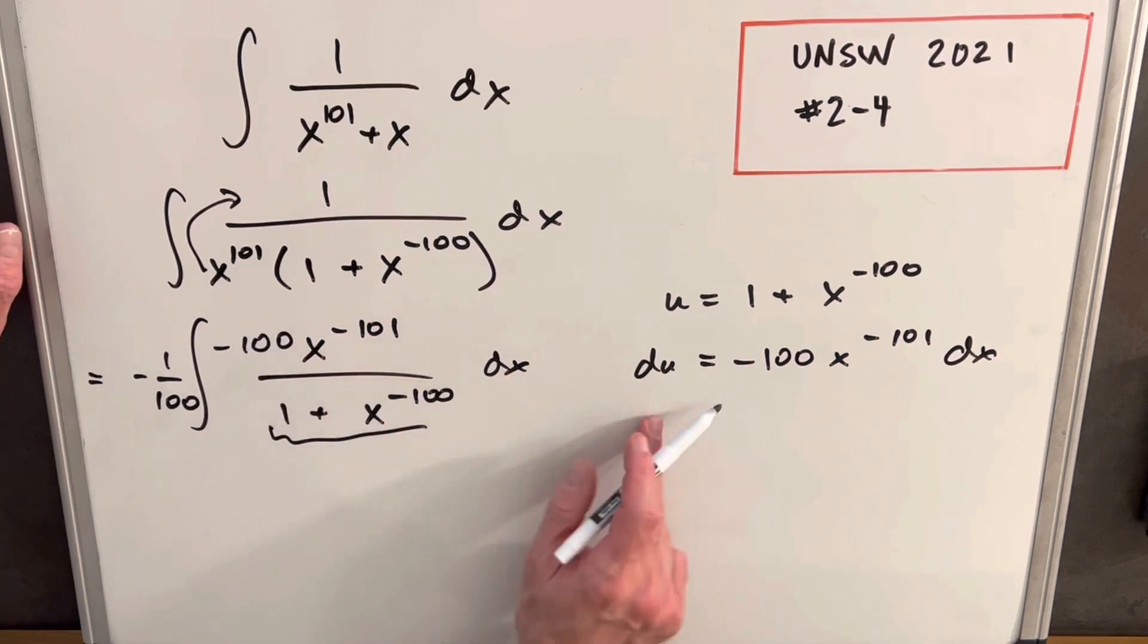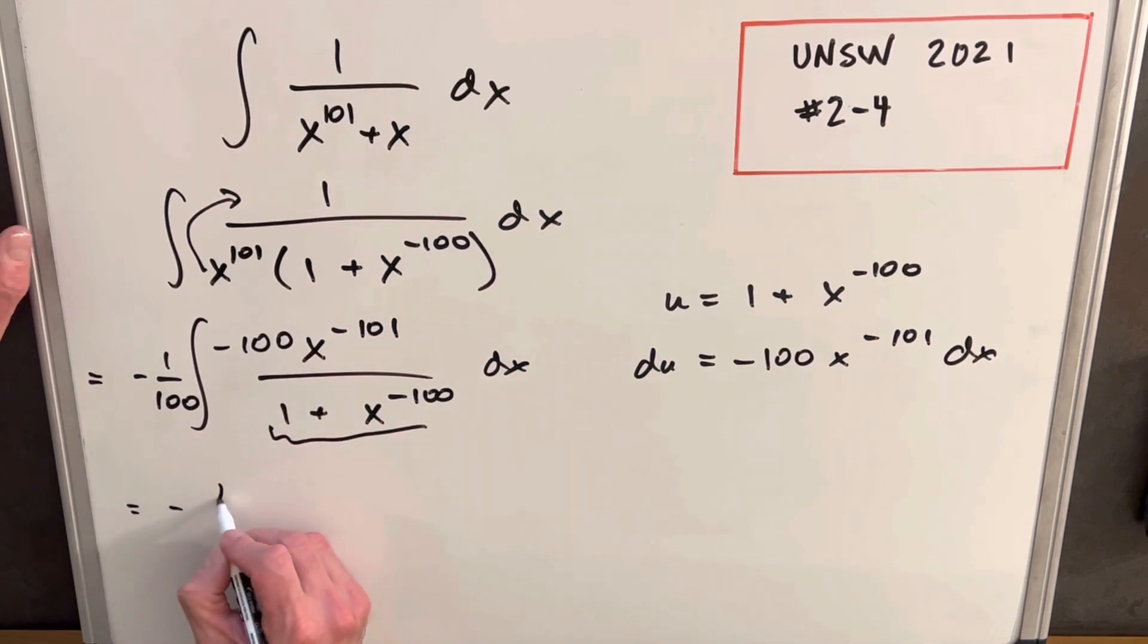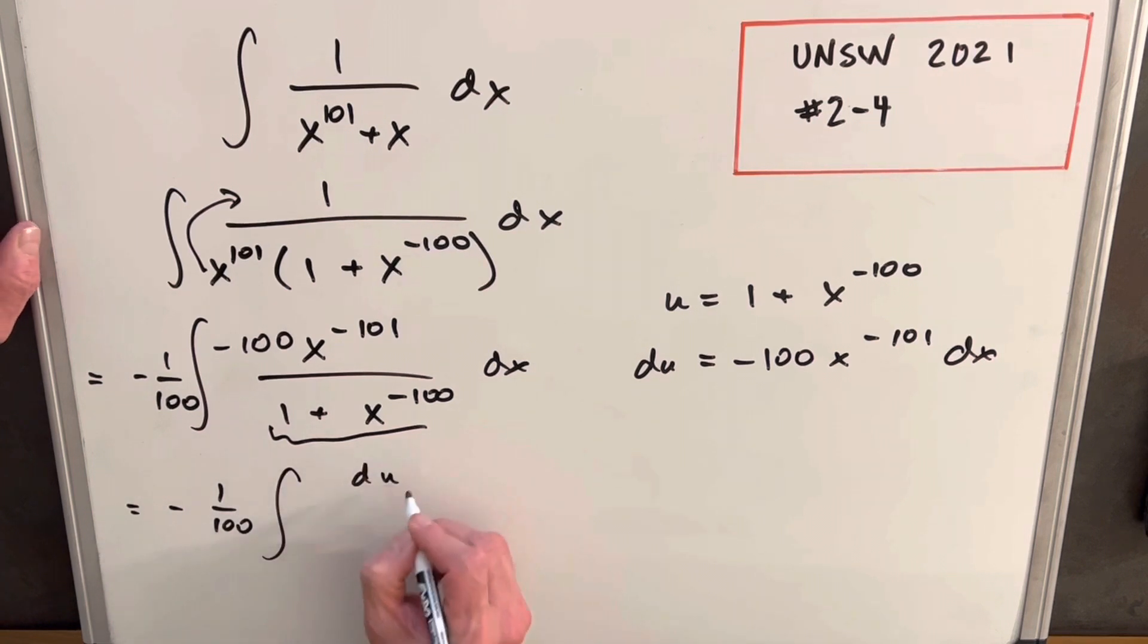From here, our whole numerator is just du. So we can rewrite this as minus 1 over 100 du in the numerator and just u in the denominator. That's just the integral. This integral is just going to be ln of u.